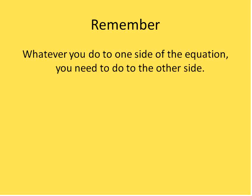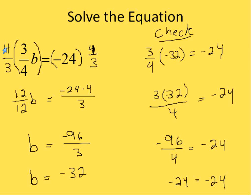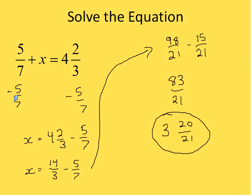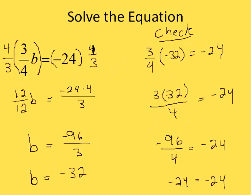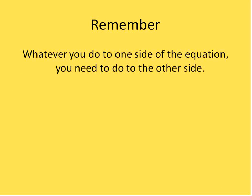Remember: whenever you do something to one side of an equation, you need to do it to the other side as well — whether that means multiplying by a fraction or subtracting a fraction. This is the property of equality, and it allows you to isolate the variable and get it by itself.